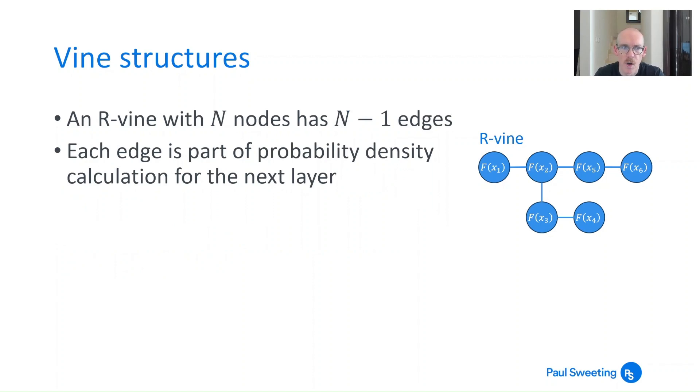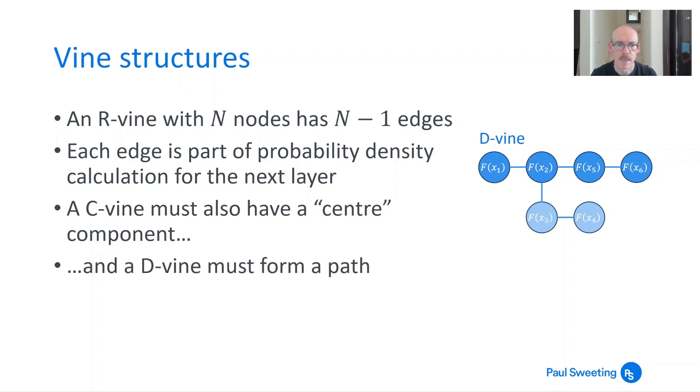Now when we look at the structure of an R-vine, all R-vines have N nodes and N minus one edges. And you can also say each edge is part of the probability density calculation for the next layer. So we'll talk about that in a later video. But essentially what this means is that if this is the first level that we're looking at, you could take the second level as being a tree made up of the edges from the first level. And then that itself would have its own edges which could then be cascaded down to become the tree in the next level and so on. This is important when it comes to trying to fit a copula and when we try to look at how well a particular structure is fitting because all of the dependencies that are implied become very important. A C-vine must have a center component and a D-vine must form a path. This is just essentially restating what we've already discussed, but these are core definitions for what make a C-vine and a D-vine.